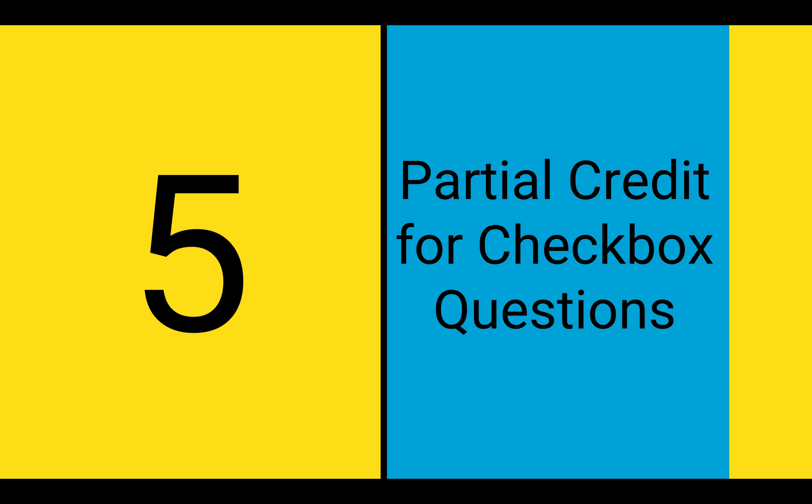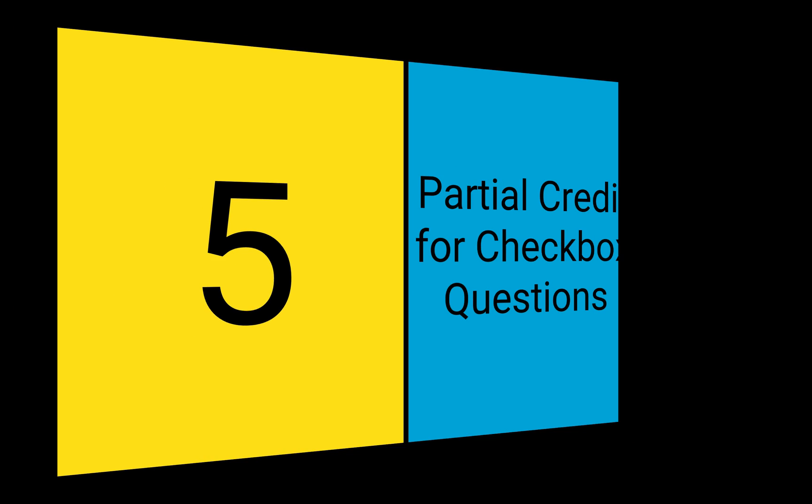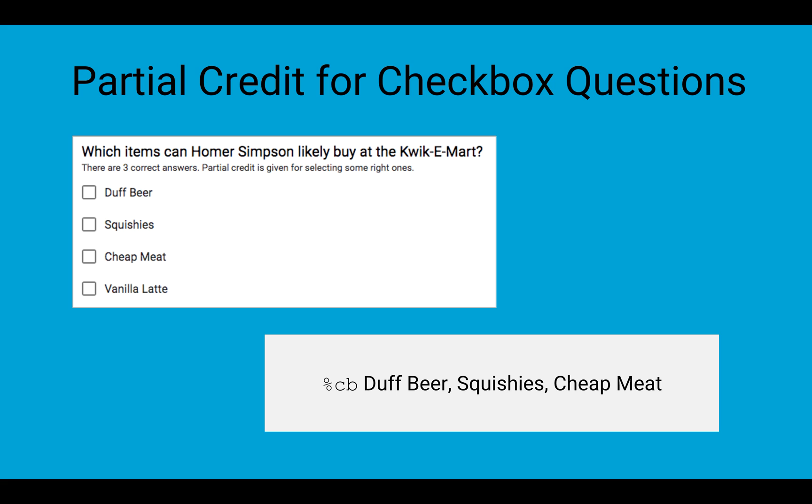Number 5. Partial Credit for Checkbox Questions. Typically when grading a checkbox question in a Google form, the student has to check all the same boxes you did in your answer key to get the question right. But with the %CV or checkbox modifier in your answer key, now you can assign partial credit if the student checked at least some of the correct answers.